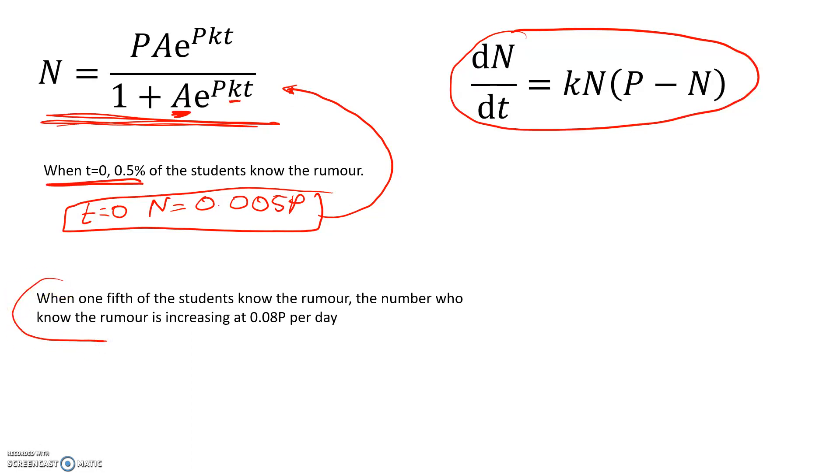This one we can work into the differential equation itself. When one-fifth of the students know the rumour, then dN/dt equals 0.08P. If one-fifth know the rumour, the number who know is equal to 0.2P. So we're going to substitute this into this side, and this into this side.